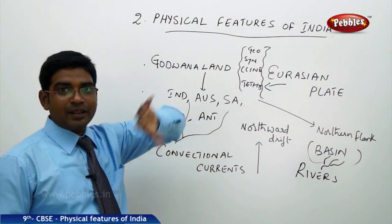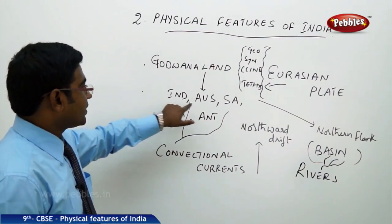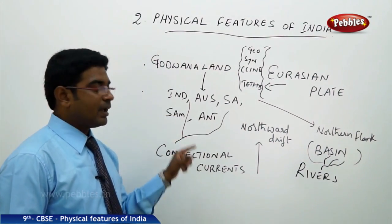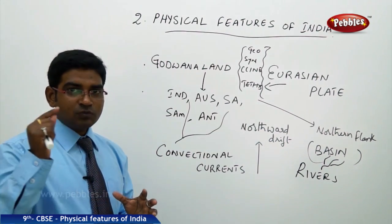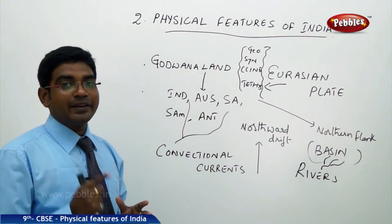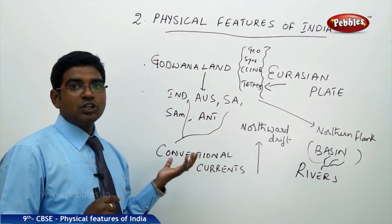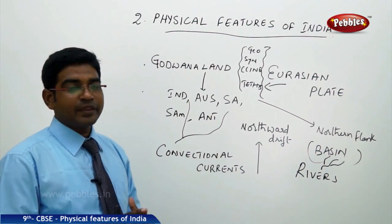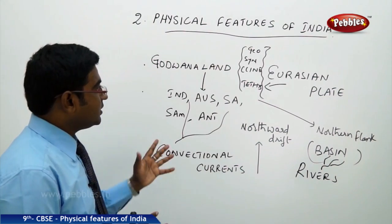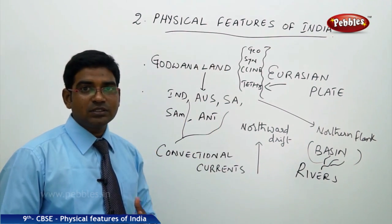Gondwana land comprised the plates of present-day India, Australia, South Africa, South America, and Antarctica. This Gondwana land got split by convectional currents which acted on the internal landmass, breaking it into the Indo-Australian plate. This plate was then tilted towards the north and began moving in the northward direction.